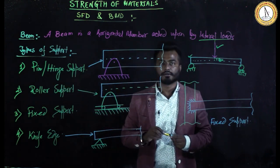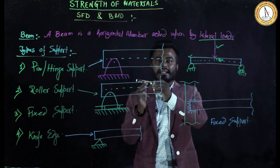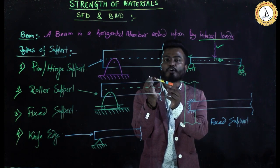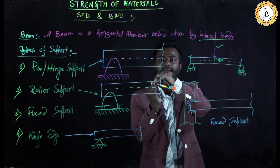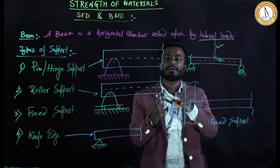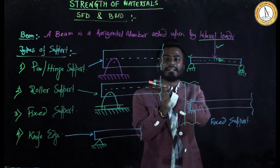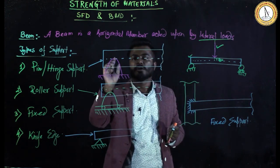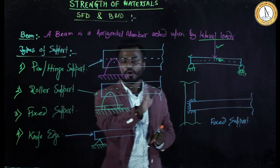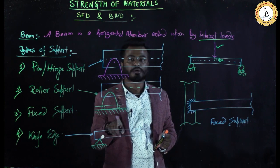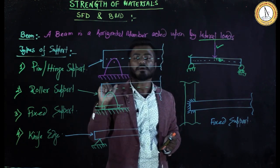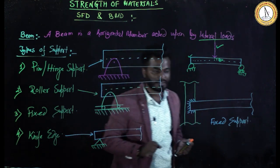To summarize: for pin support, the pin does not allow horizontal movement or vertical movement, but rotation is allowed. For roller support, horizontal movement is allowed, vertical movement is not allowed, and rotation is allowed. The support gives no reaction against applied horizontal movement but does resist vertical force.